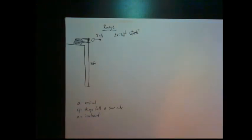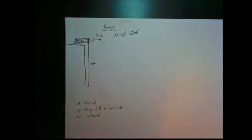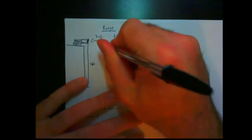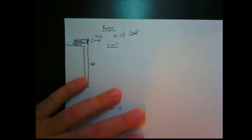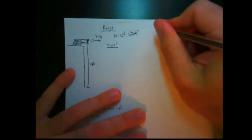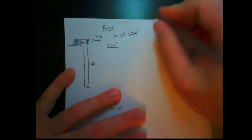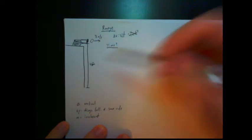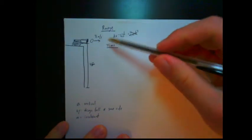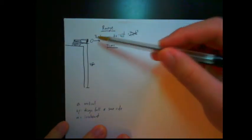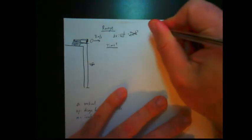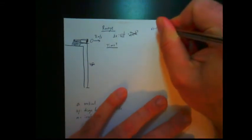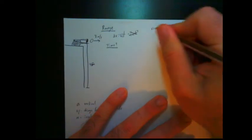Constant velocity times time gives us the range. But do we have the time? We do not. So first we need to solve for the time. Now, time is a vertical function. As this ball falls, it will occur the same way as if it were just dropped. We don't care about the horizontal motion, we only care about vertical.